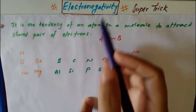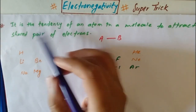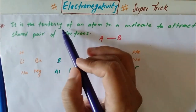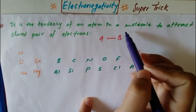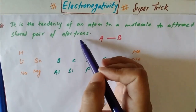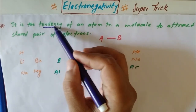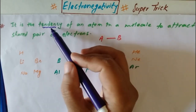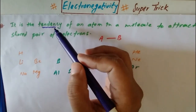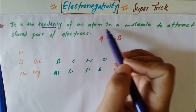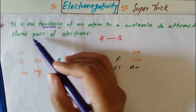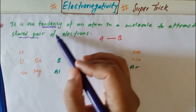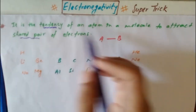First of all, what is electronegativity? Electronegativity is the tendency of an atom in a molecule to attract a shared pair of electrons. It is a tendency or capacity of an atom in a molecule to attract a shared pair of electrons.